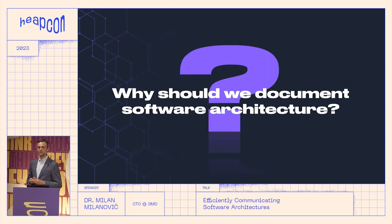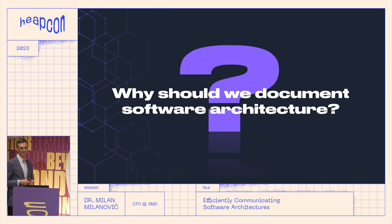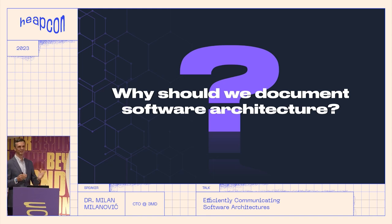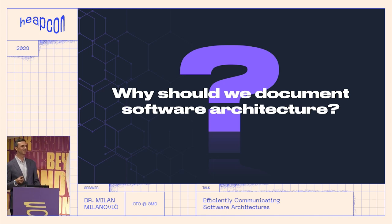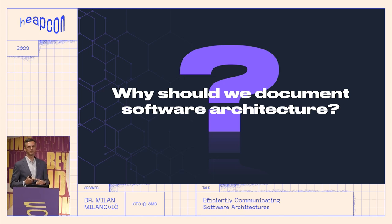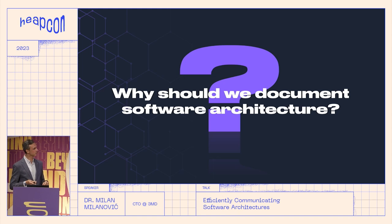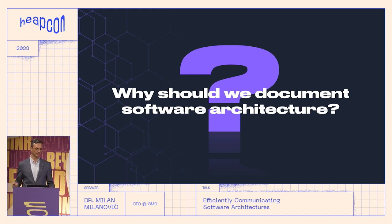But why should we document software architecture? There are some people who say we shouldn't. In a poll I saw for today's presentation, about half of the people don't have any architectural documentation. The thing is that code doesn't tell everything. What does code not tell? What are the goals of our system? What are some non-functional attributes of our system? And also, what are some decisions that we made which produced such code later?